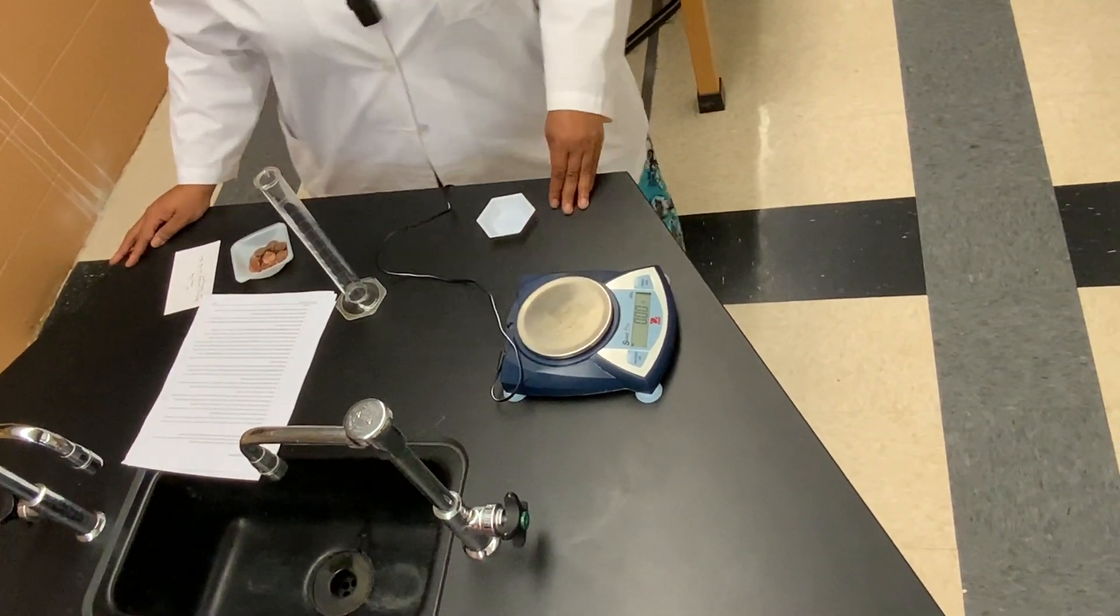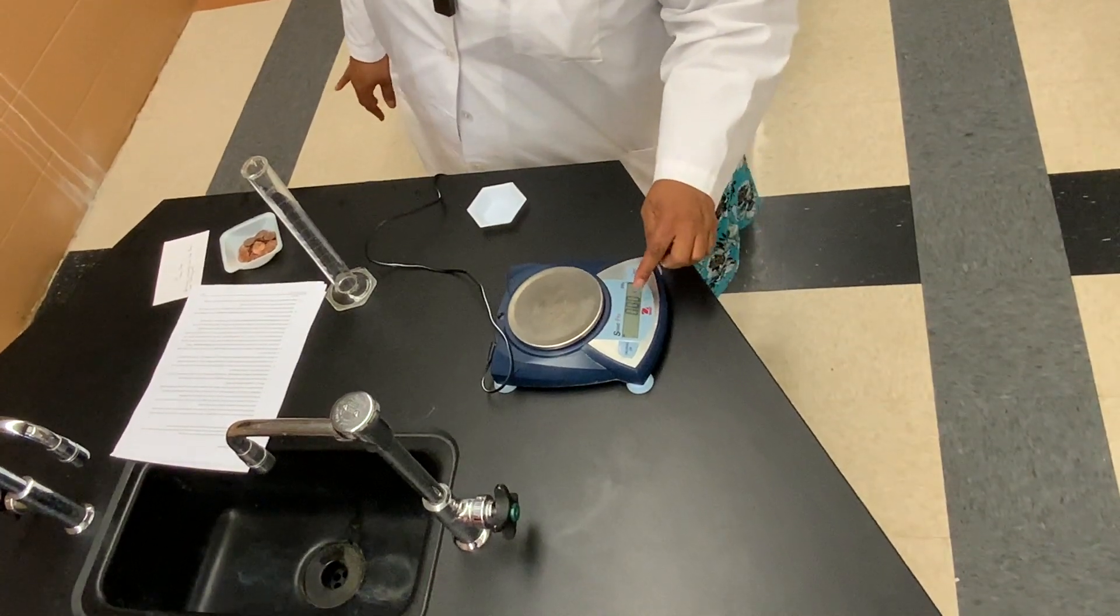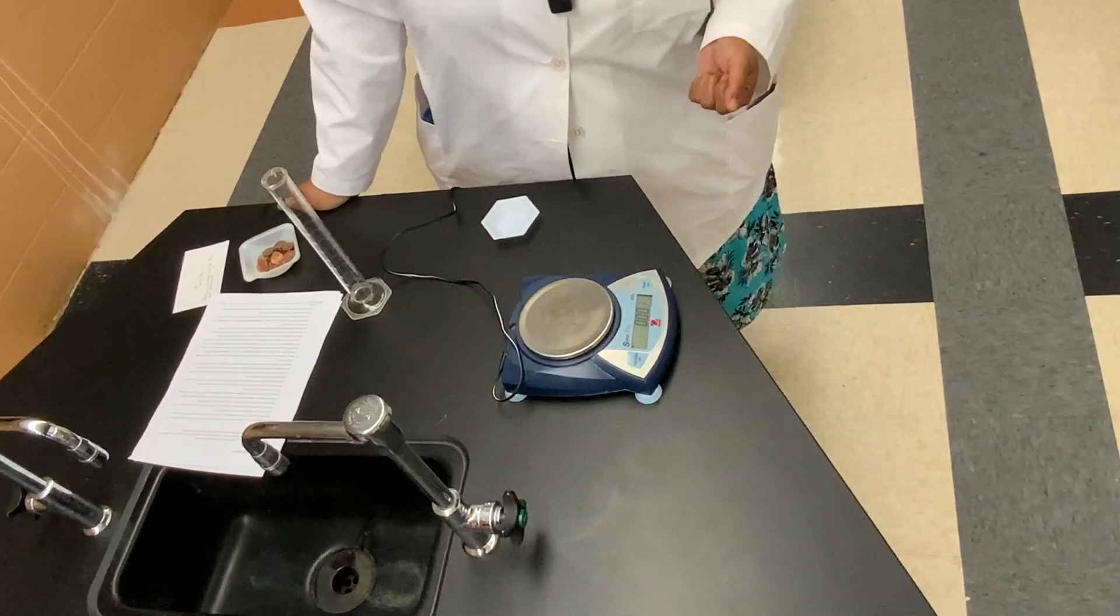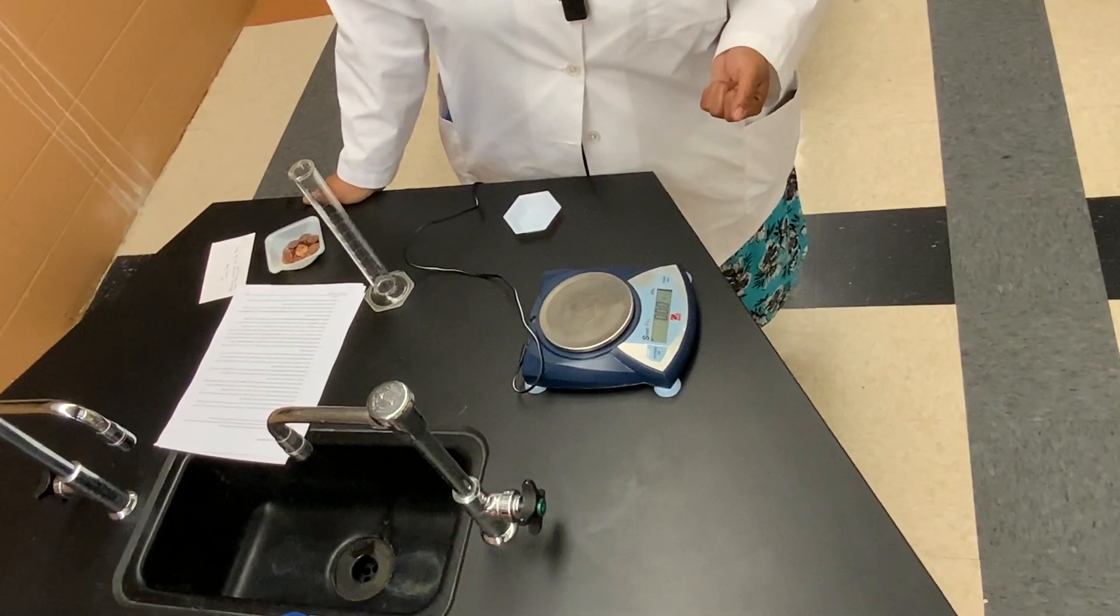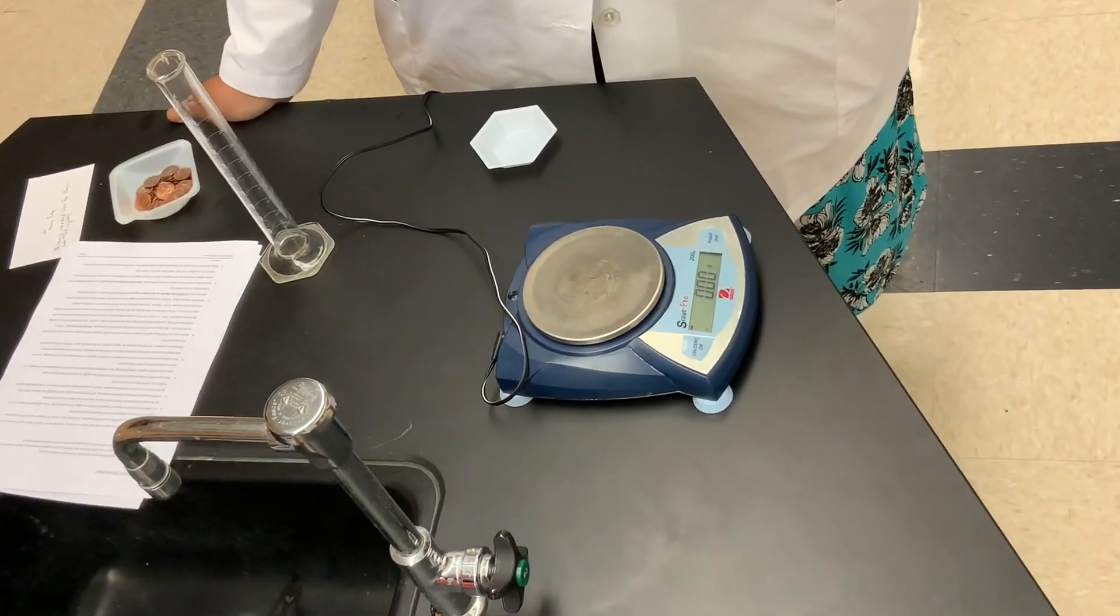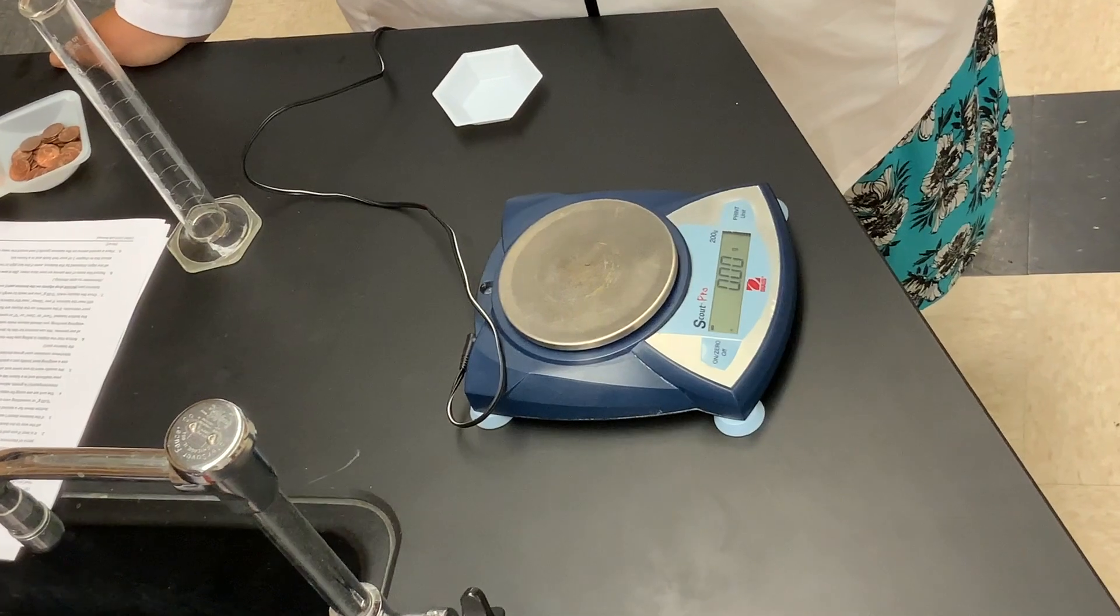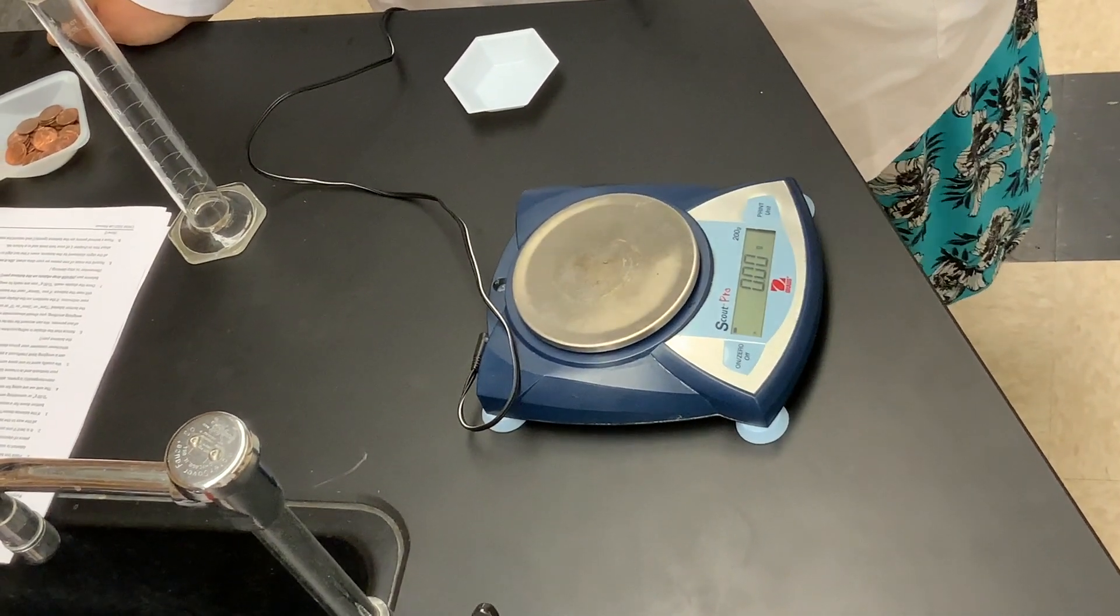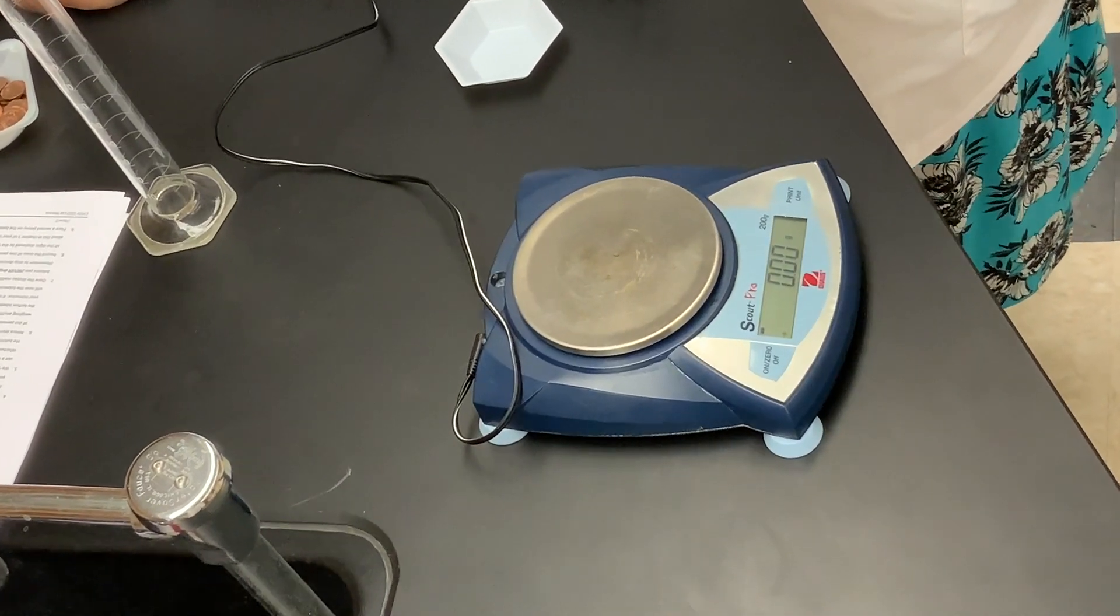Notice that on our balance, we have 0.00. We see the three digits there, 0.00. What this means is that we can measure something accurate to two significant figures on this balance.